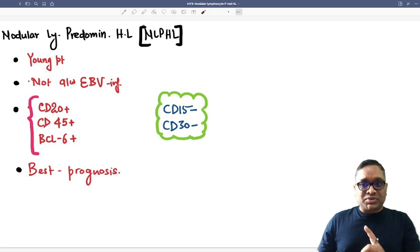Not associated with Epstein-Barr virus infection, and they will be CD15 and CD30 negative, which is seen in classical Hodgkin's lymphoma. What they will be positive for? They will be positive for CD20, CD45, and BCL6.